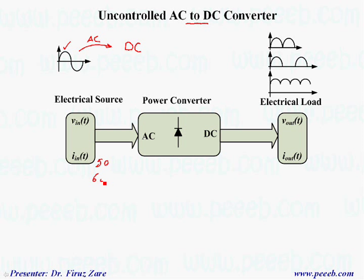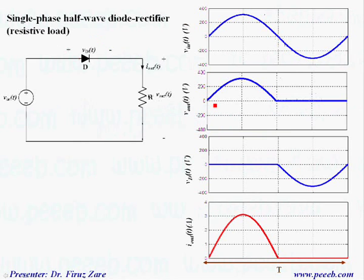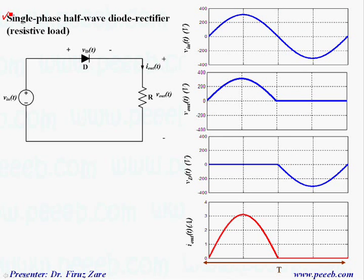In this case, we normally get a DC voltage — either full-wave or half-wave — or in a three-phase system we get a similar voltage. Let's start with a single-phase half-wave diode rectifier, which is just a single diode as the converter.